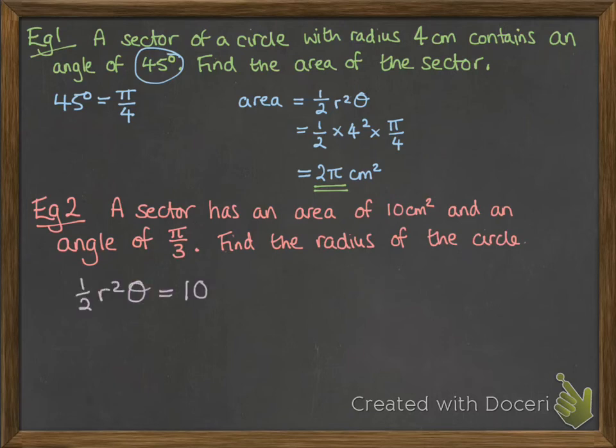We know that half r² theta has to equal 10, because we're told that the sector area is 10. And the angle we were given was π by 3, so we'll substitute that in. Now it's just a matter of rearranging and solving.